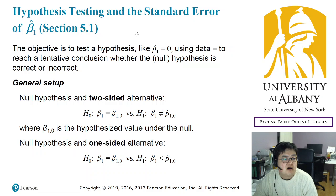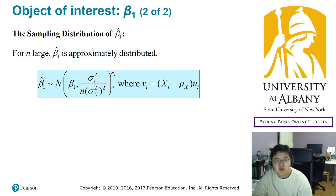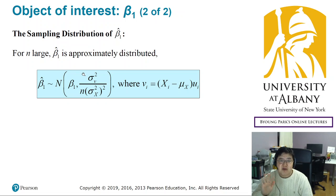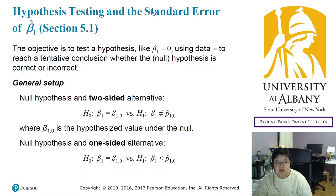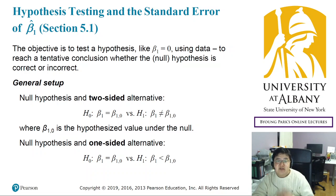Then we are going to use this normal distribution approximation — everything will be approximated to a normal distribution. Based on this normal distribution, we would like to do hypothesis testing, and we are going to calculate the standard error. These two are closely related. I am going to explain hypothesis testing in the next video, so see you there. Bye.